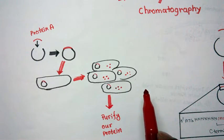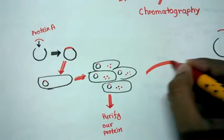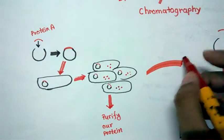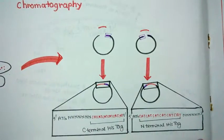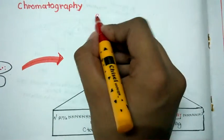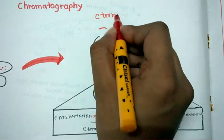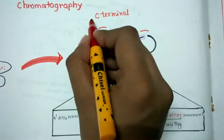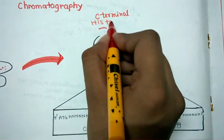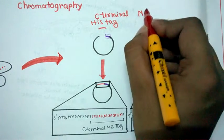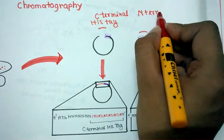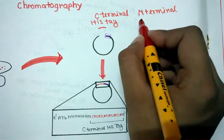So let's say a bit more about the cloning procedure. So what we would do during the time of cloning, we can use a C-terminal his tag or we can use an N-terminal his tag.